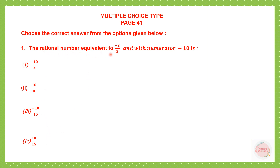The rational number equivalent to minus 2 by 3 and with numerator minus 10 is one of these. So that means we are going to write this rational number and the numerator has to be minus 10. Now how do we get a numerator minus 10? The rational number is minus 2 by 3 and the numerator is minus 2. How do we make it minus 10? If we multiply 2 into 5, we get 10.